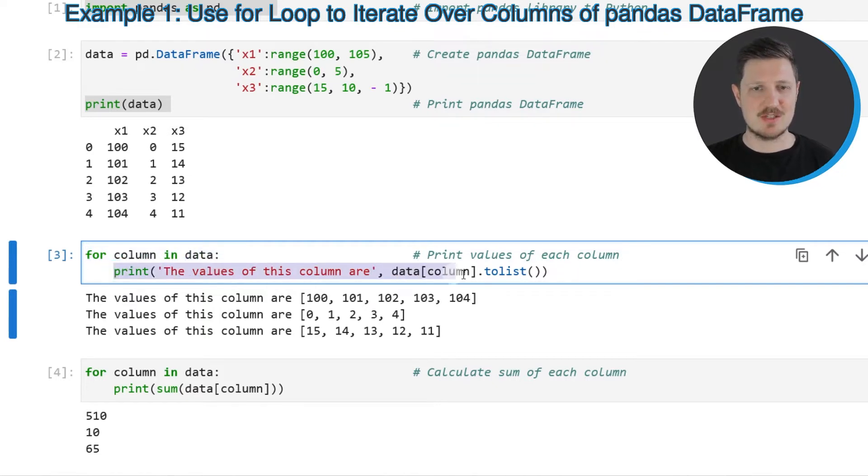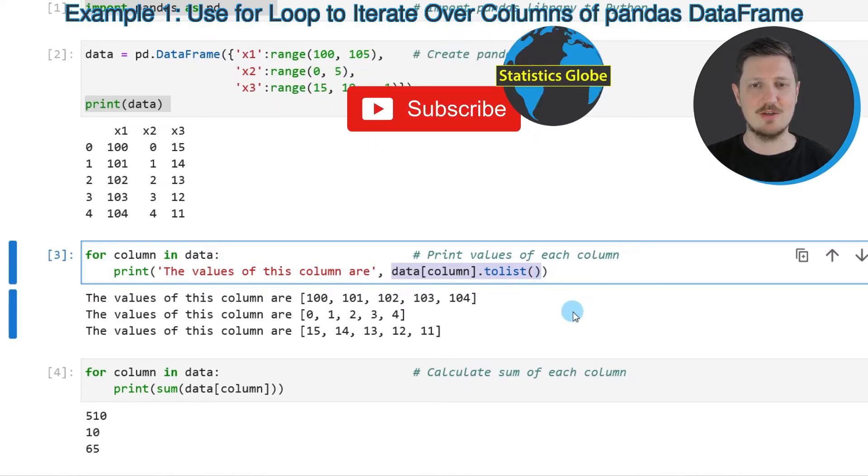And then in the second line I'm specifying what I want to perform within this for loop. In this case I want to print the character string, the values of this column are, and then I'm extracting the values in this column as a list.